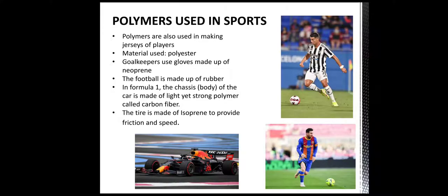Polymers are also used in sports. In making jerseys for players, the material used is polyester, which with some modification can provide comfort and help keep body temperature normal. Goalkeepers use gloves made of neoprene, which has good friction to grip the ball. The football itself is made of rubber. In Formula One cars, the chassis — that is the body of the car — is made of a light, strong polymer called carbon fiber, and the tires are made of isoprene to provide good friction and speed.